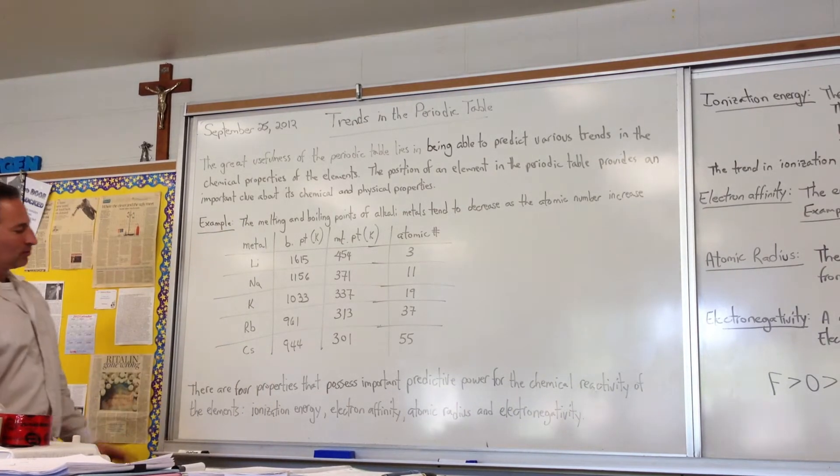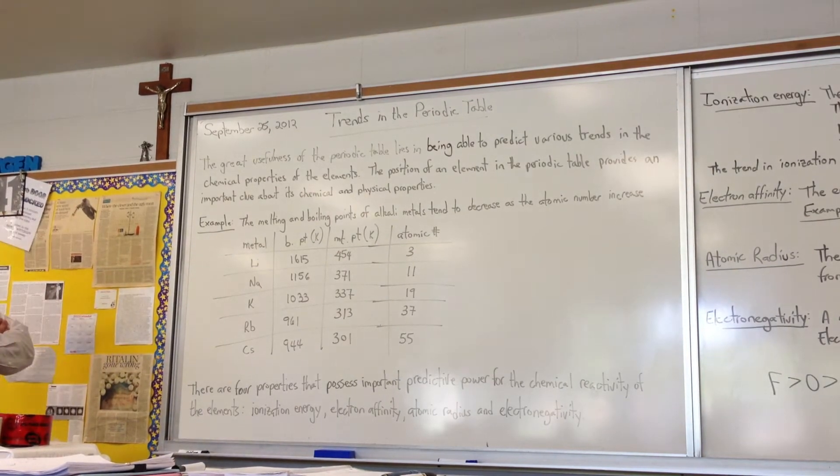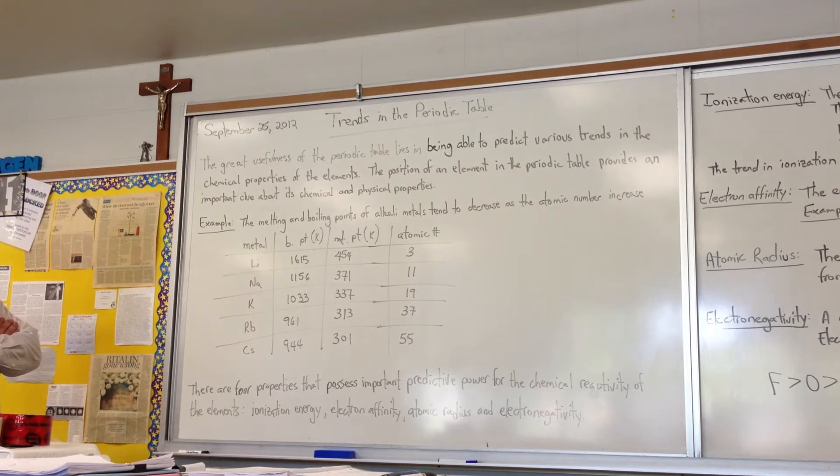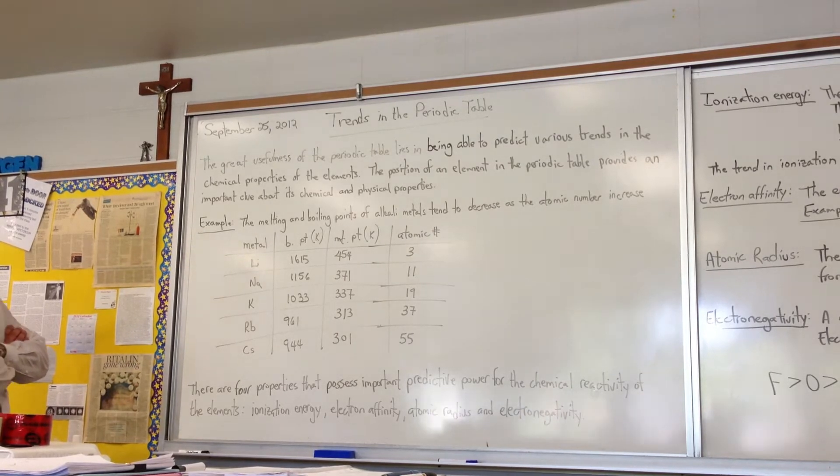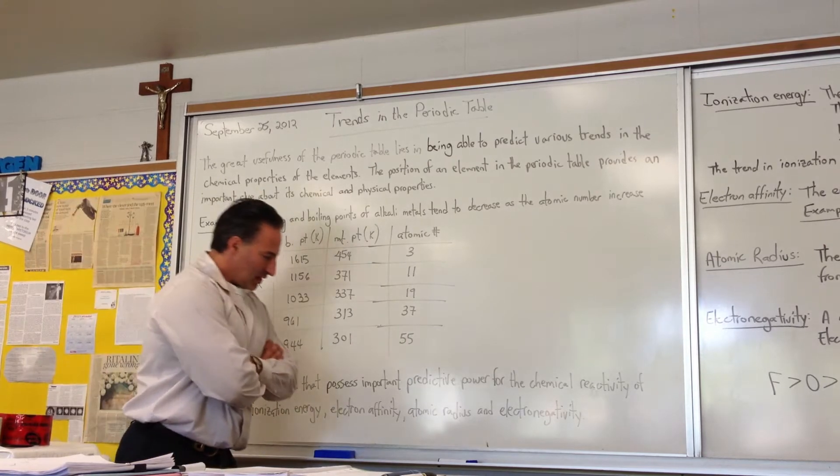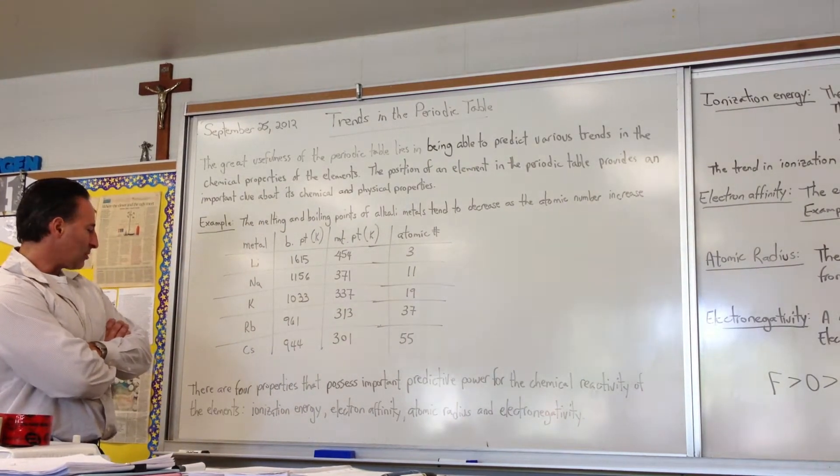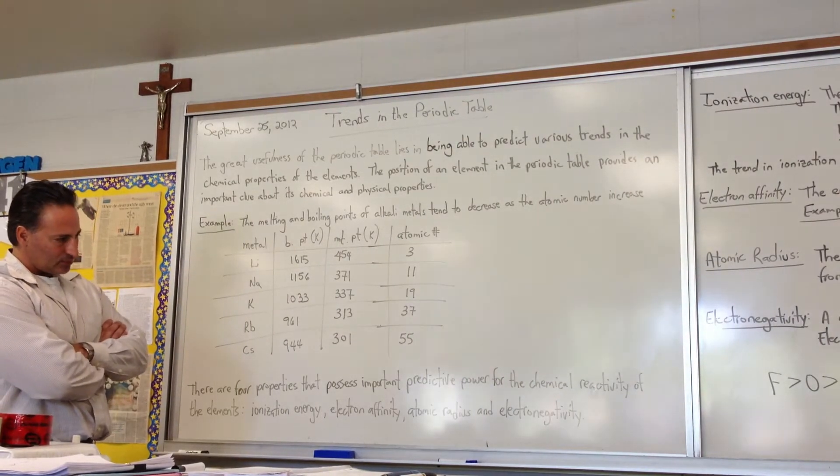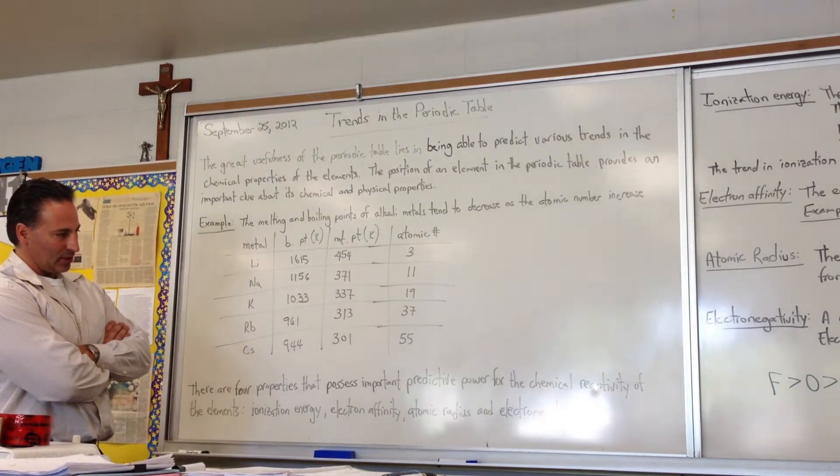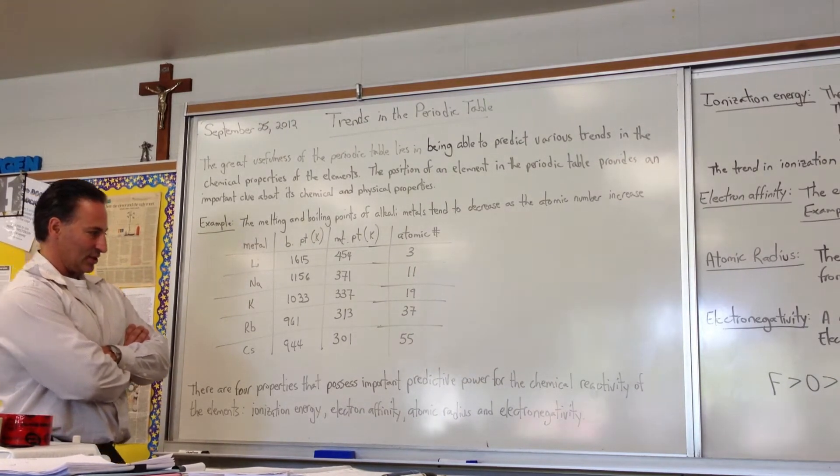There are four properties in the periodic table, or trends, that we should be aware of, because they possess the important predictive power for the chemical reactivity of the elements. They are ionization energies, electron affinity, atomic radius, and electronegativity. If you know a little bit about these properties of the element, you could make pretty good predictions about the reactivity of the element under certain conditions.